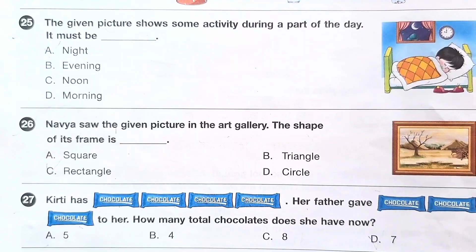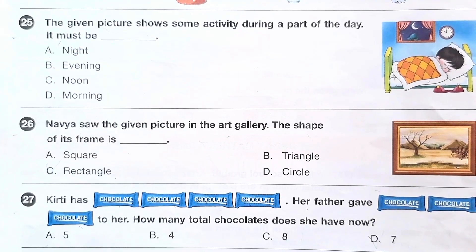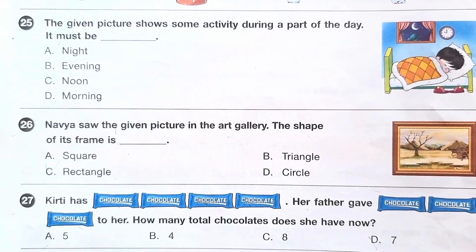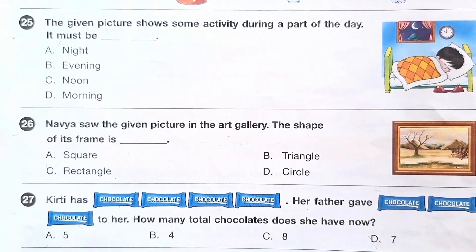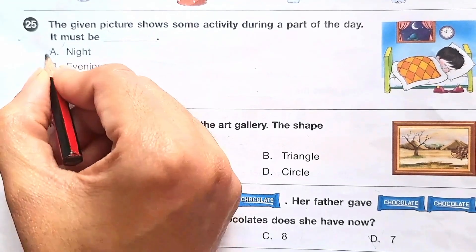Question number 25: the given picture shows some activity during a part of the day. It must be dash. The answer is option A — Night.